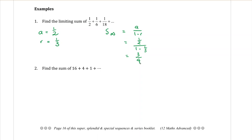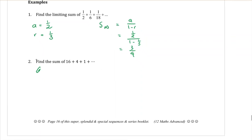Question two, find the sum of, so same kind of question, the first term is 16. What is R this time? Not negative four. One over four, good.